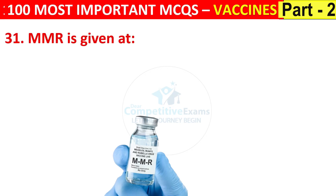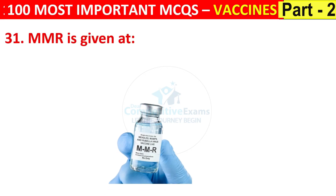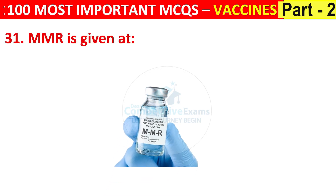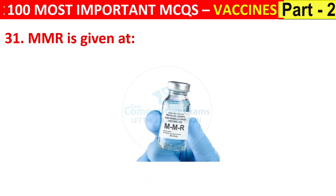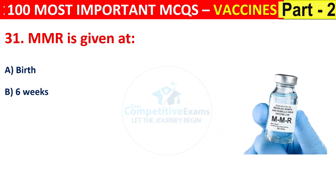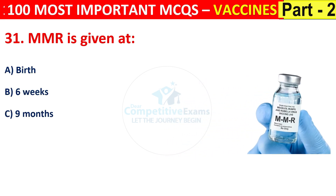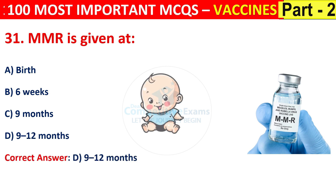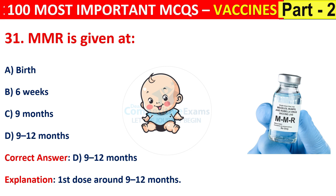Question number 31. MMR is given at birth, 6 weeks, 9 months, or 9 to 12 months. The correct answer is D, that is 9 to 12 months. The first dose around 9 to 12 months is administered.